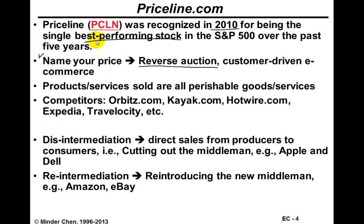Priceline.com has been doing well and that has attracted a lot of competitors, such as Orbis.com. Orbis is a consortium of several airlines that teamed up to offer airline travel services online. There's also a company called Kayak, which is a meta search engine that searches multiple websites to do price comparison or comparison shopping for you. Hotwire is another one. We also mentioned Travelocity and Expedia earlier.